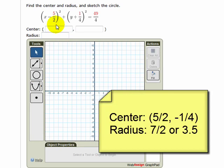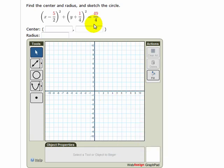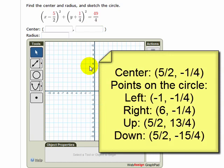So I can look at this equation and tell that the center is at 5 halves, negative 1 fourth. The radius of this circle is 7 halves, so what I need to do first is find another point that's going to be on the circle. I can do this by taking the center point and adding or subtracting 7 halves from either the x coordinate or the y coordinate.